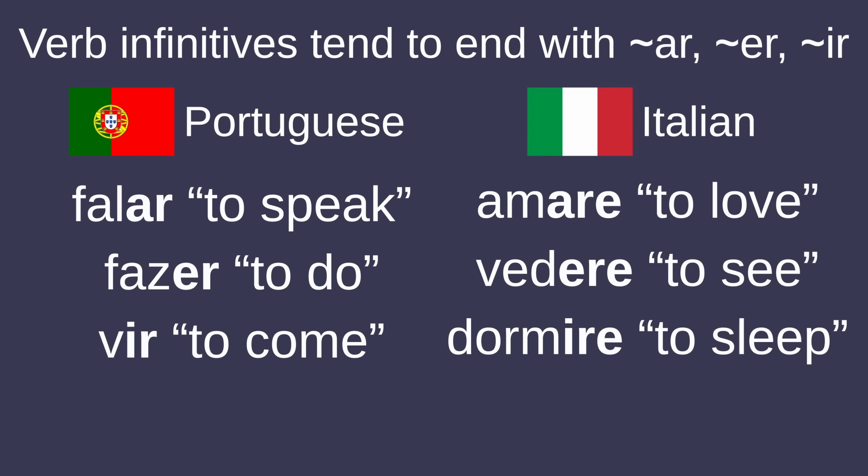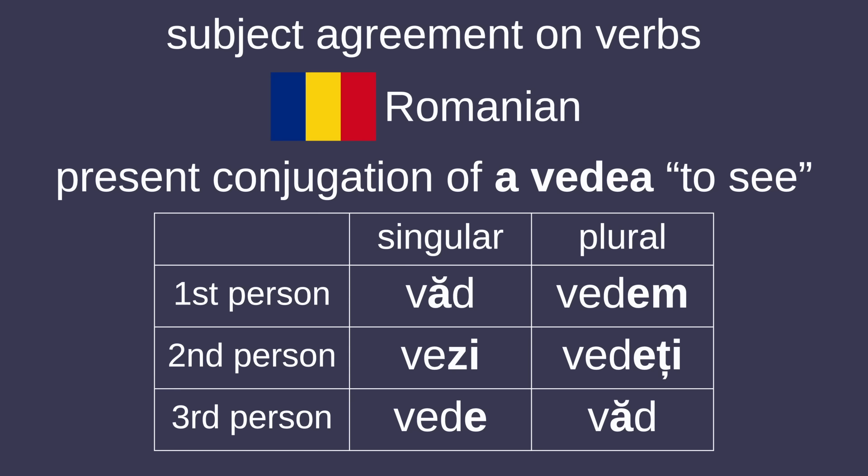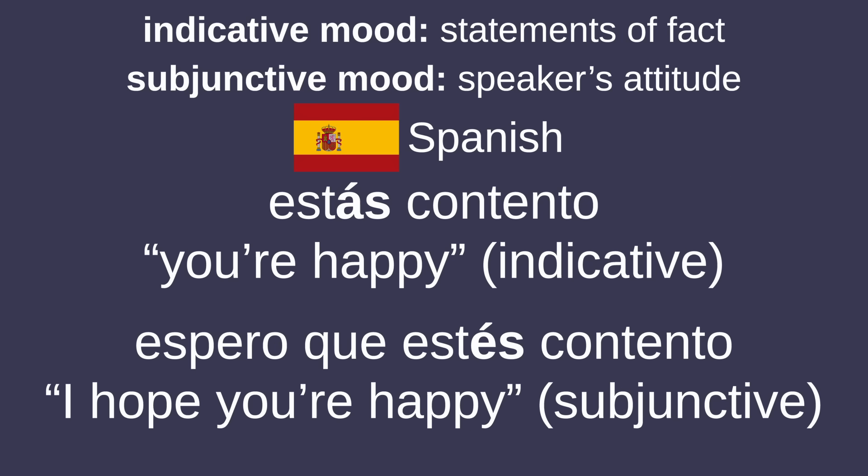Verb infinitives tend to end with -ar, -er, -ir, or something similar, and verbs change depending on the subject, changing between the first, second, and third persons in both the singular and plural. There's also a distinction between the indicative mood, used for statements of fact, and the subjunctive mood, used for wishes, emotions, opinions, and other not necessarily real actions. There are also the imperative and conditional moods, used for commands and conditions respectively.